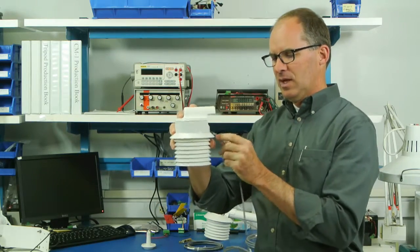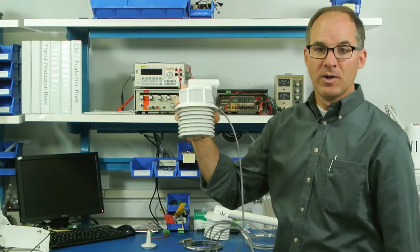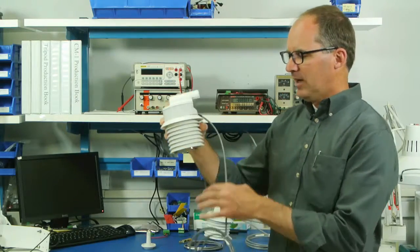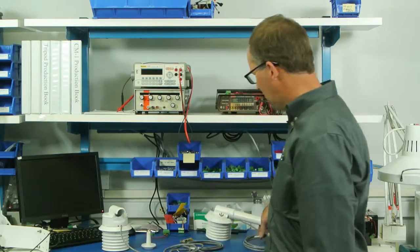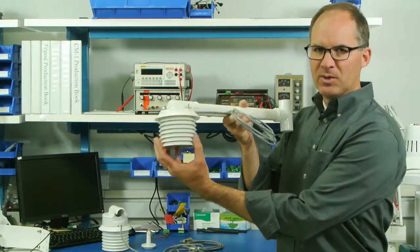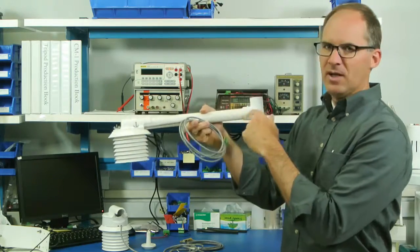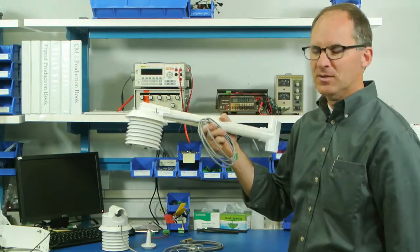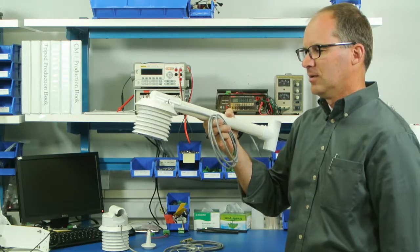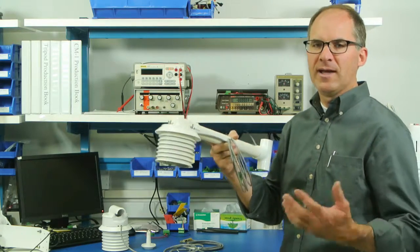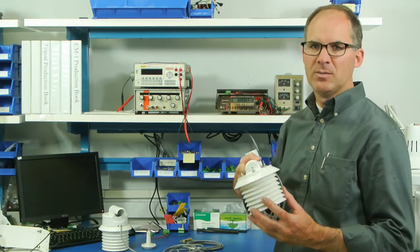This aspirator configuration can be upgraded in the field. It provides forced airflow that's drawn from around any heated air that might be affecting the temperature and exhausts it away from the temperature sensor. This further ensures that we have an accurate representation of the ambient air temperature and humidity.